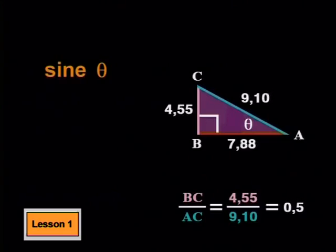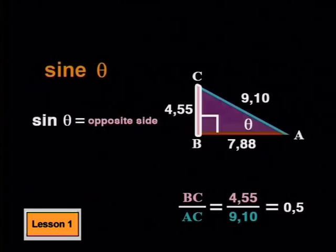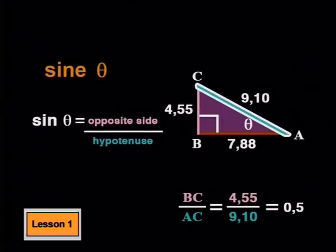Mathematicians have called this constant value sine of the angle. Using theta to represent any angle, we can define sine theta as the ratio of the side opposite the known angle divided by the hypotenuse.